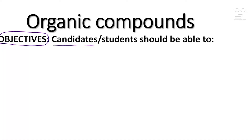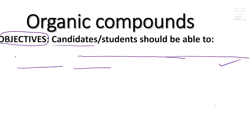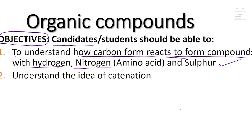The objectives of organic compounds — students and candidates are expected to know the following. Number one: to understand how carbon forms compounds, such as with nitrogen and amino acids as well as sulfur. Students should also be able to understand the idea of catenation.